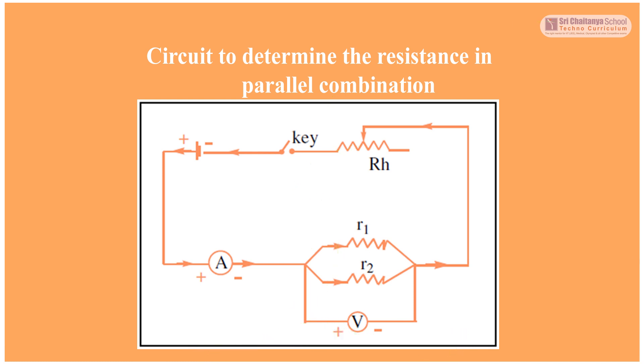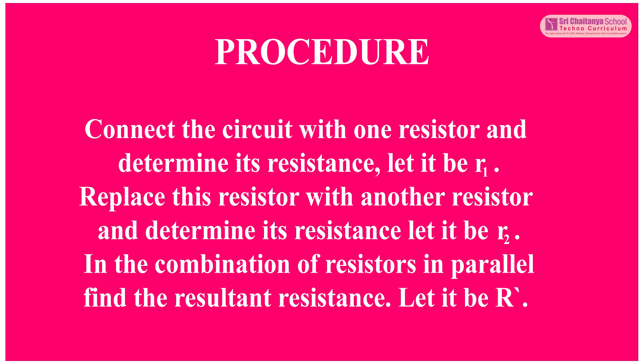Circuit to determine the resistance in parallel combination. Now let us see the circuit. Now it is time to see the procedure. Connect the circuit with one resistor and determine its resistance — let it be R1. Replace this resistor with another resistor and determine its resistance — let it be R2. In the combination of resistors in parallel, find the resultant resistance — let it be R'.